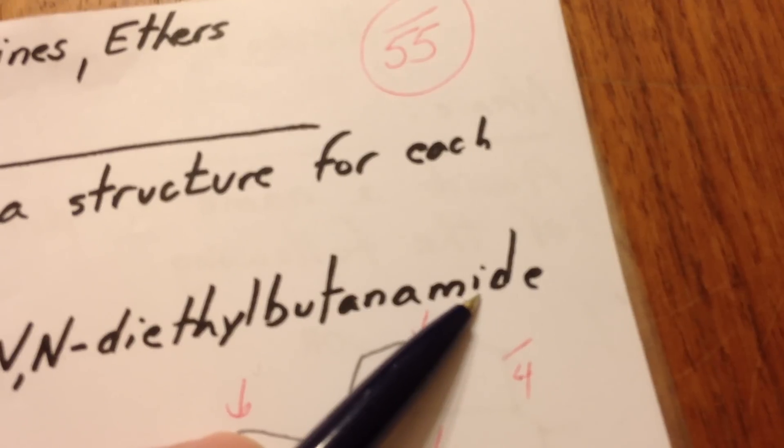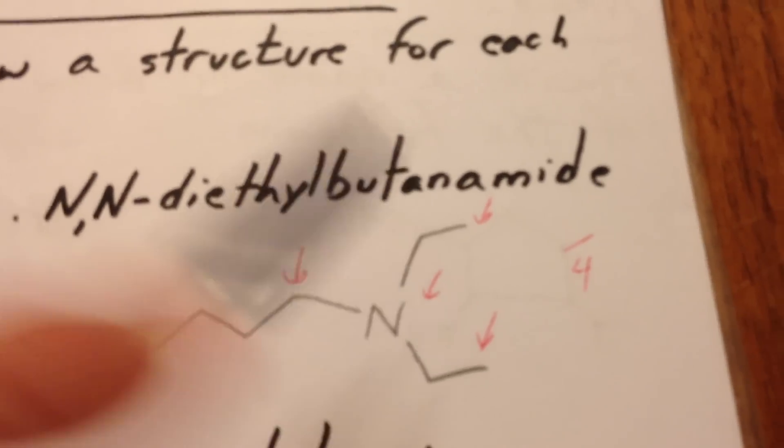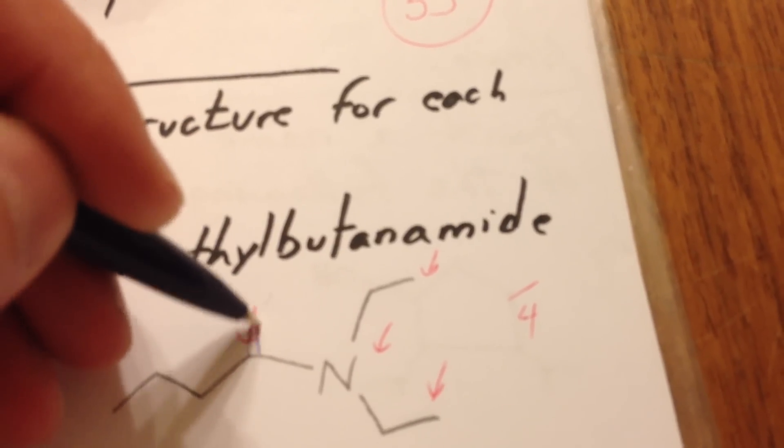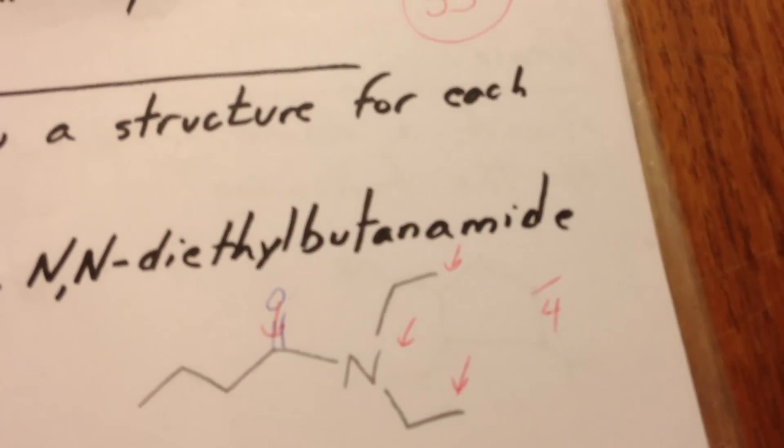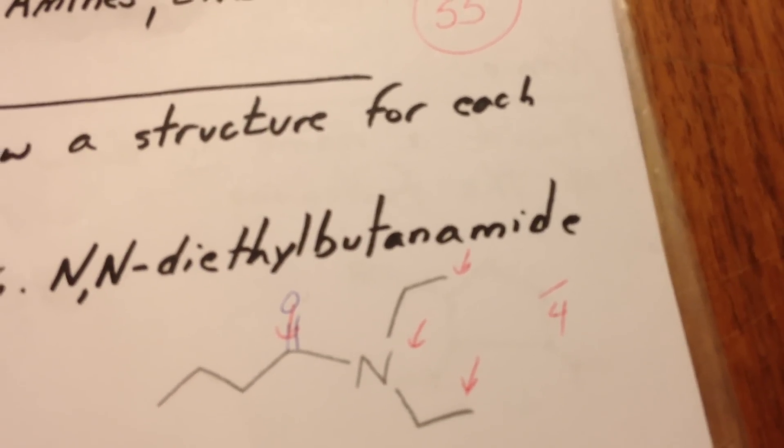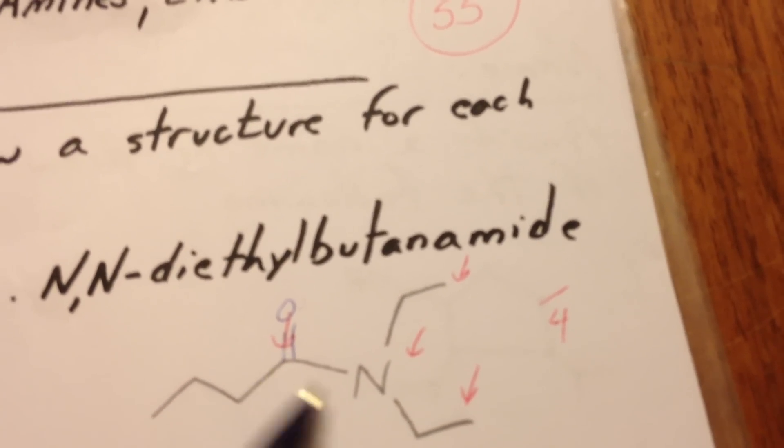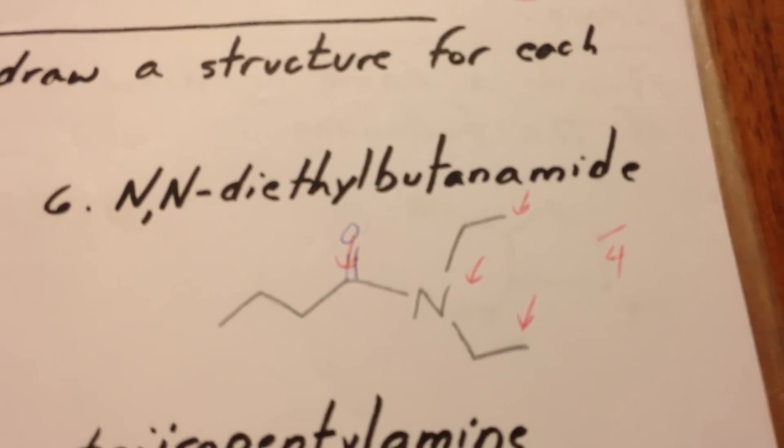I meant to say butanamide. But what's written here should have a double bond at this position. N,N-diethylbutanamide. If it's called an amide, it has to have a carbonyl next to the nitrogen. Sorry about that.